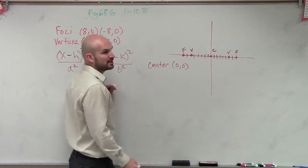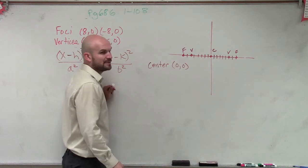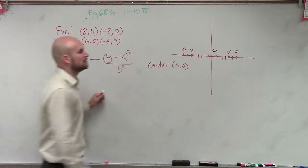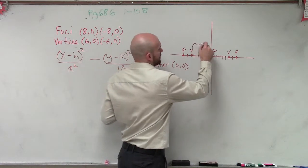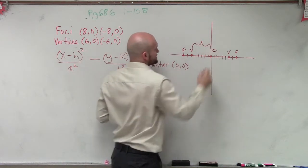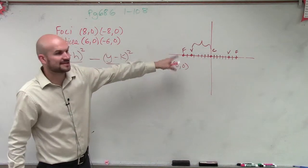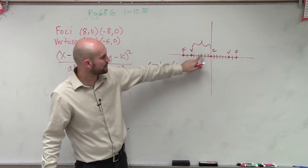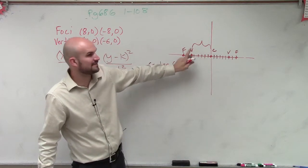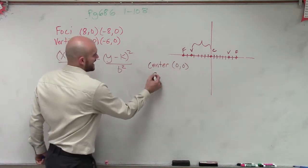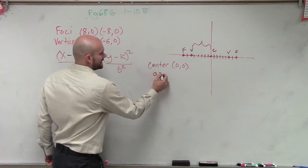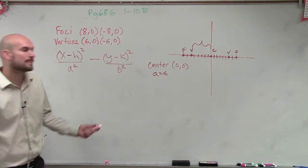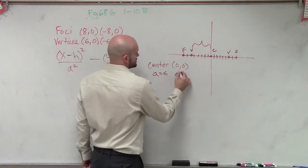Now we need to determine what our a, b, and c are — well, actually we just need to determine what a and b are. We know a is the distance from the center to the vertices, which we can count as 1, 2, 3, 4, 5, 6. So a equals 6, and a squared equals 36.